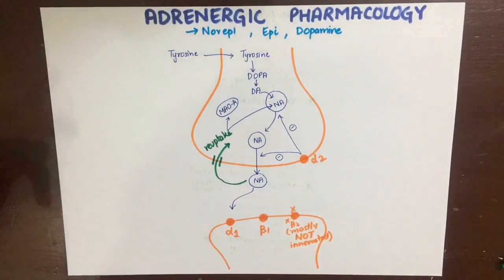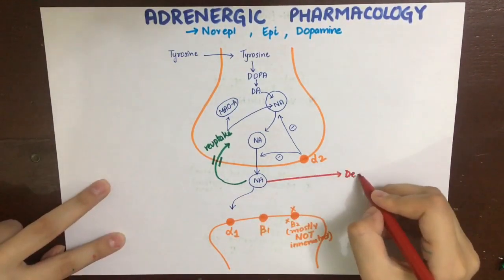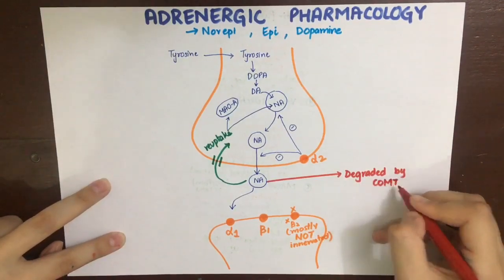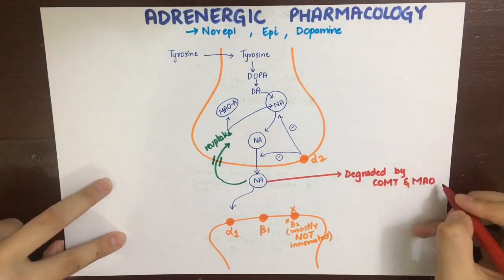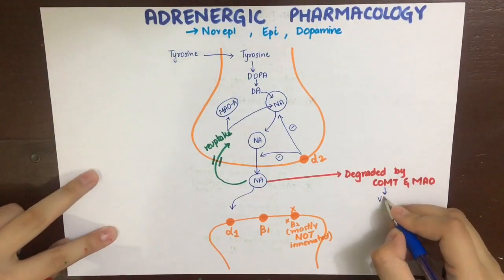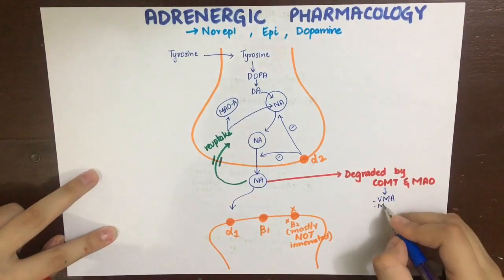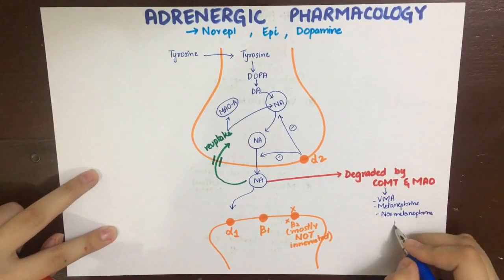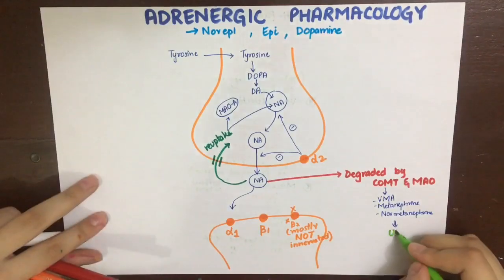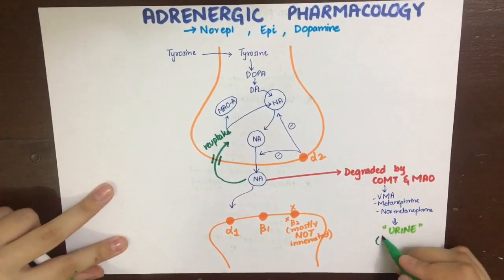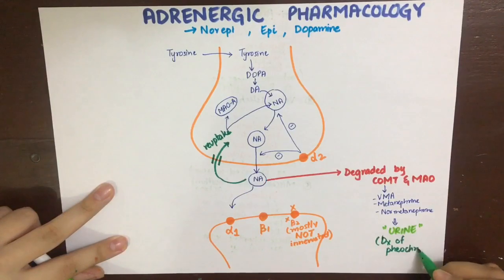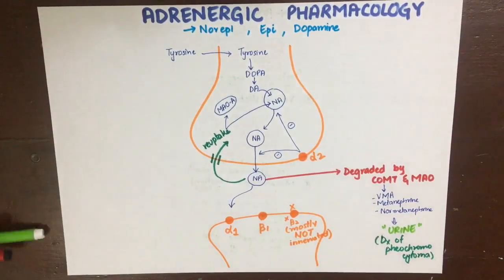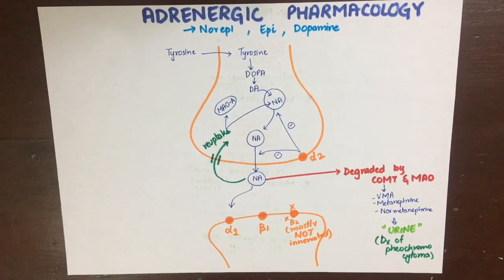Released norepinephrine is also degraded by the enzymes catechol-O-methyltransferase (COMT) and monoamine oxidase (MAO), which convert it into metabolites: vanillylmandelic acid (VMA), metanephrine, and normetanephrine. All of these metabolites are excreted in the urine and can be used as diagnostic tools for pheochromocytoma, a tumor of the adrenal medulla that releases large amounts of epinephrine.